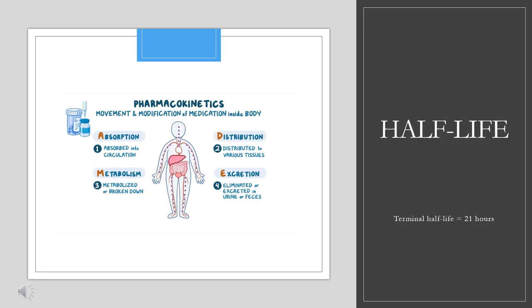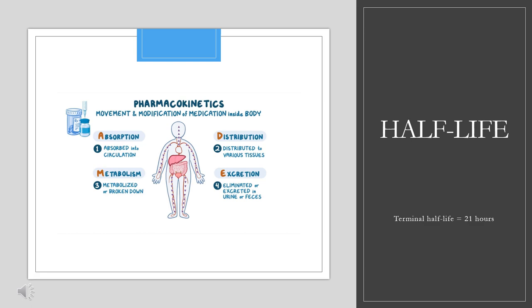Half-life: Terminal half-life equals 21 hours. Dose — Diabetes mellitus type 2: Indicated as an adjunct to diet and exercise to improve glycemic control in adults with type 2 diabetes mellitus. The recommended dose is 25 mg orally once daily (PO QD).